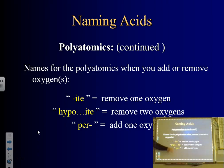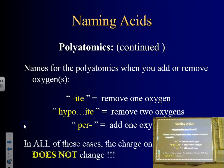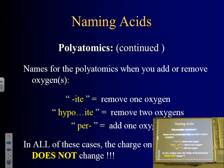Keeping this in mind will help us with naming acids. Most importantly, the charges never change. Adding or removing oxygens doesn't change the charge — chlorate will always have a negative one charge. That's why you want to know your polyatomics.